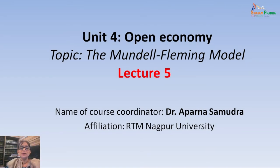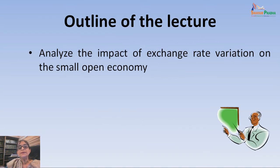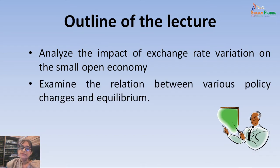Hello learners, welcome to unit 4 of the open economy. Today's lecture is in continuation of the Mundell-Fleming model started in the previous lecture. Previously we derived the IS star and LM star curves for the goods market and money market in a small open economy, and saw how equilibrium is achieved between exchange rates and income. Today we will examine the impact of exchange rate variation and the relationship between policy changes and equilibrium.